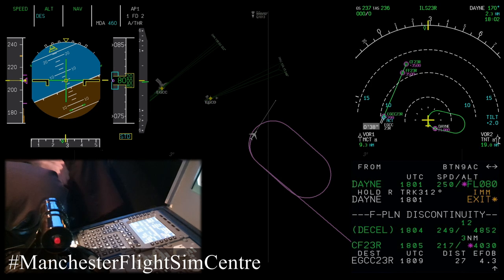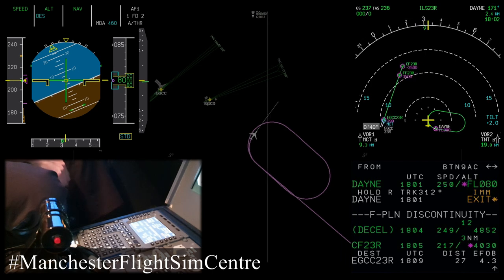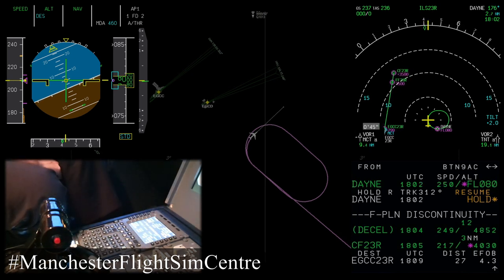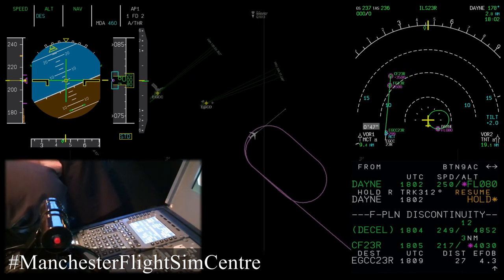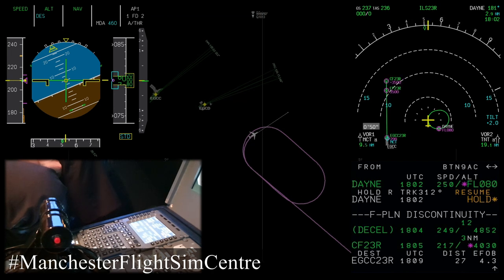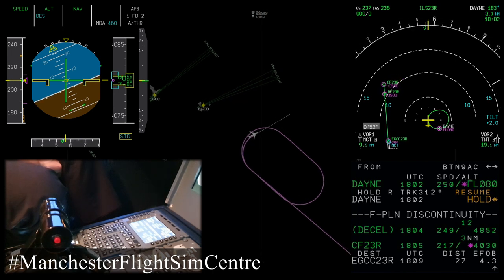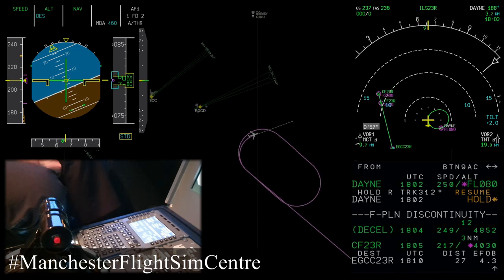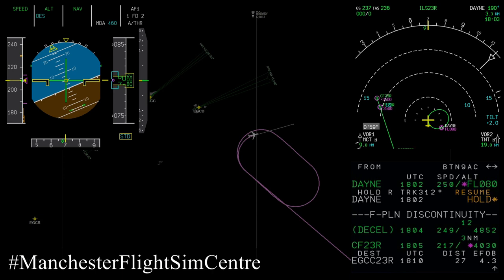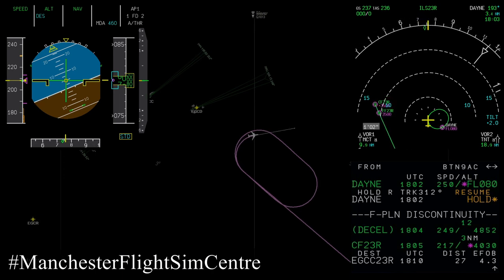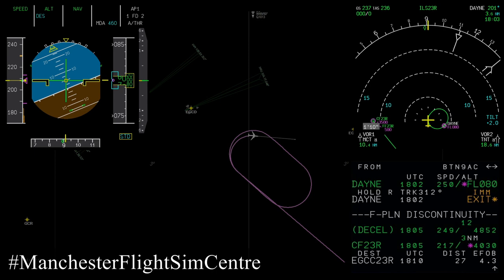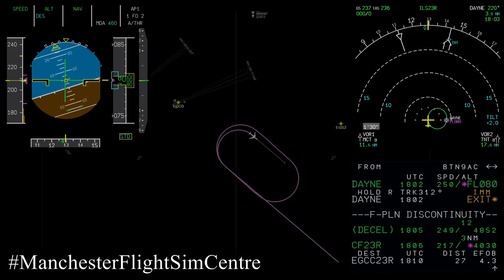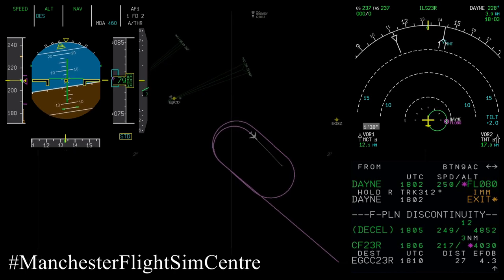In order to exit the hold on the outbound leg, if we were to select immediate exit, the aircraft gives us the option to change our minds and resume the hold. Or, if we don't do that, the aircraft will make an immediate right turn back to the holding fix and then we will continue with the flight. If we need to continue the hold, by selecting resume hold, the aircraft will continue the turn towards the holding fix — which in this instance is Dane — and then draw and follow a further holding pattern.